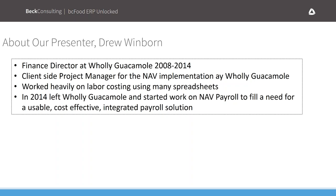Hi everyone. I worked for Holy Guacamole until we sold our company to Hormel — I was the Finance Director there. I was always really impressed with the functionality of NAV, especially on the costing side, being able to have actual cost with material costing that was as volatile as our main raw material of avocado. That gave us a great competitive advantage in the industry.